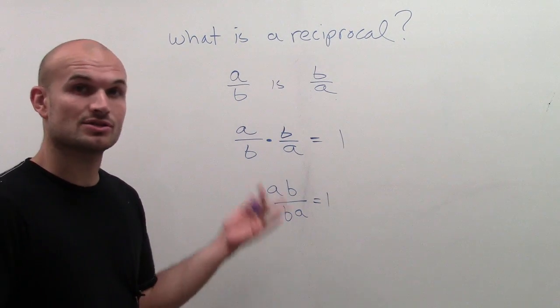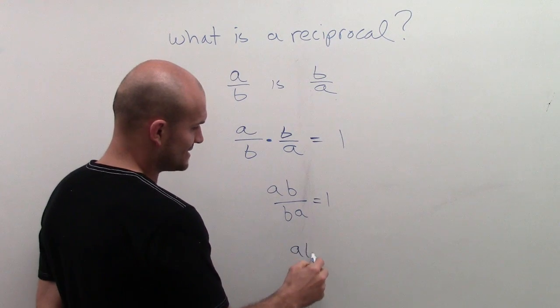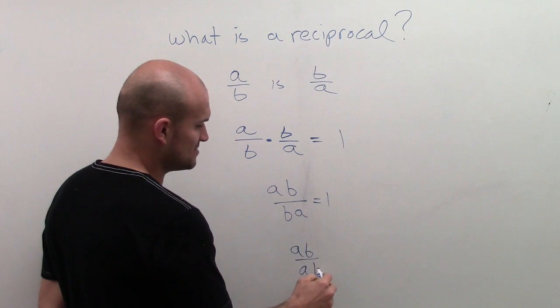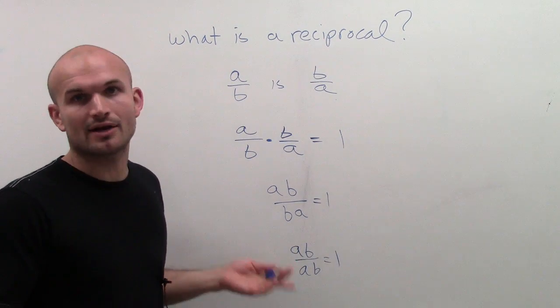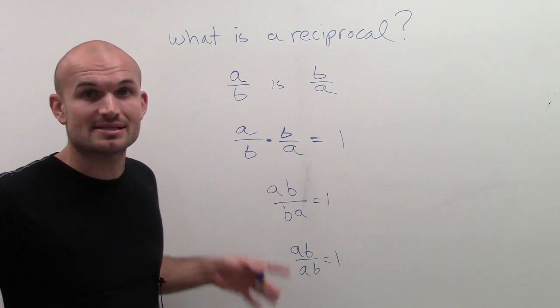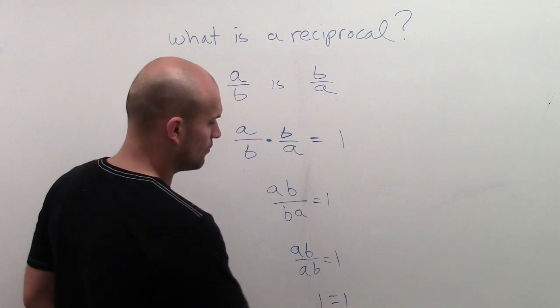Now we can rewrite this in the same form by using the commutative property. So I can have A times B divided by A times B equals 1. Well, since I'm dividing the same number by itself, even though I don't know what A times B is, of course it's going to equal 1.